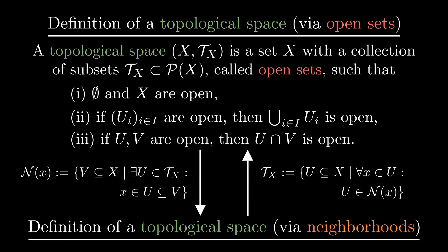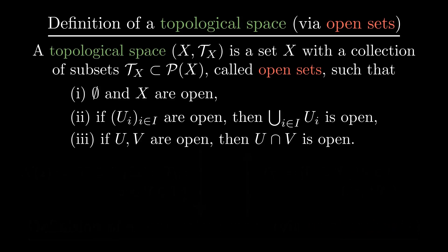Note that we don't require infinite intersections of open sets to be open. That's generally not true. For example, in the real numbers, the intersection of infinitely many shrinking open intervals can give a single point, which is not open.